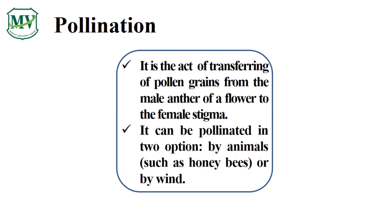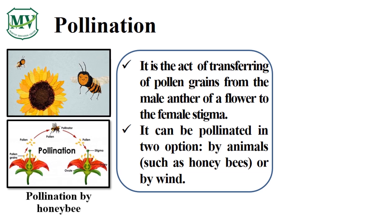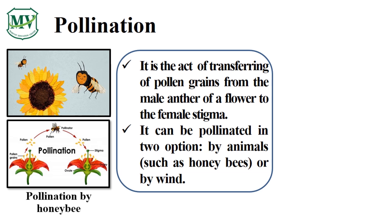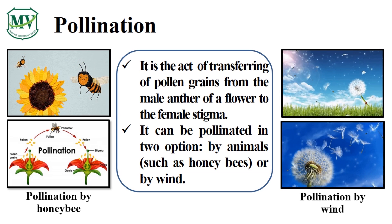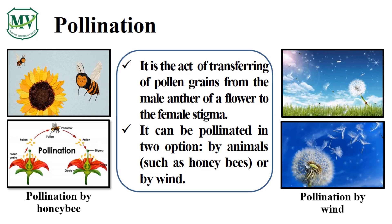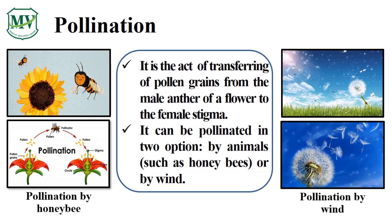Plants reproduce through pollination. Pollination is the act of transferring pollen grains. Pollination can be caused by animals, most commonly insects. One of the most common insects are honeybees — they carry pollen on their legs and wings as they fly from one flower to another to gather honey. The second cause of pollination is the wind, which carries pollen as it blows in different directions.